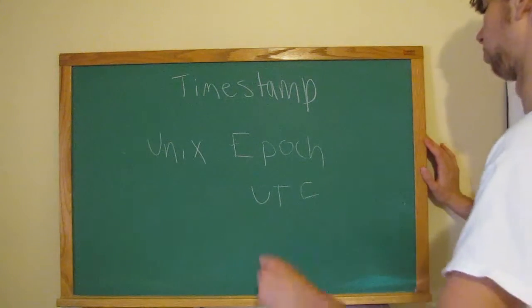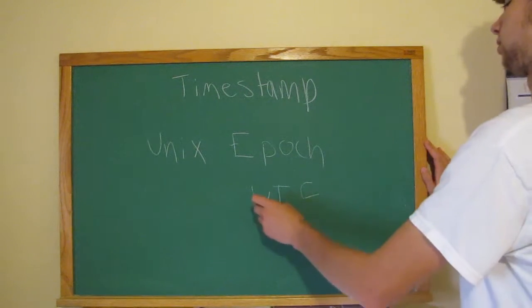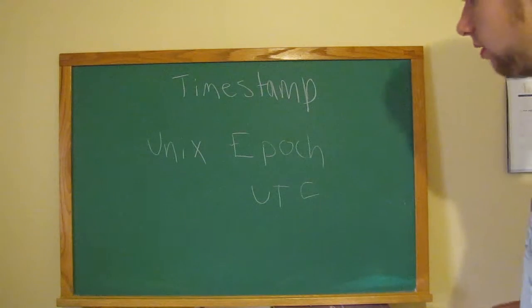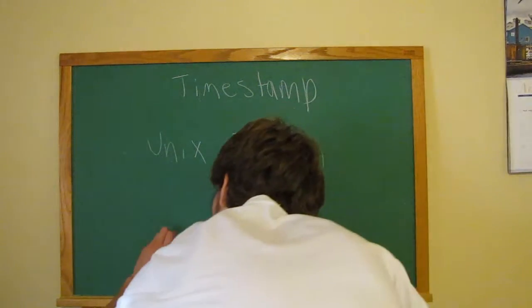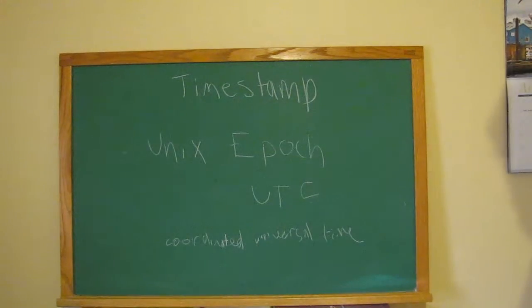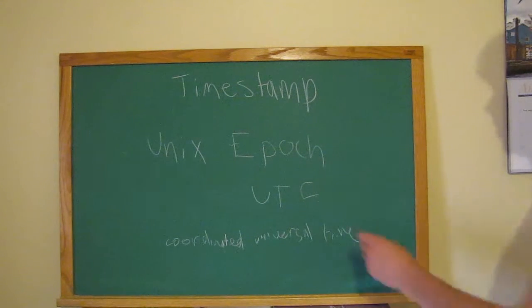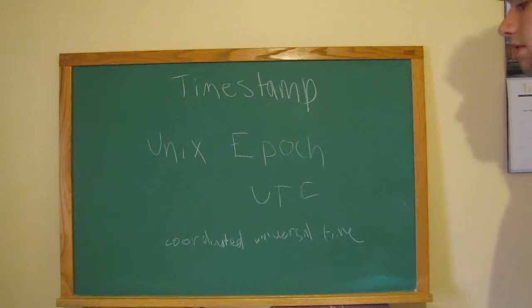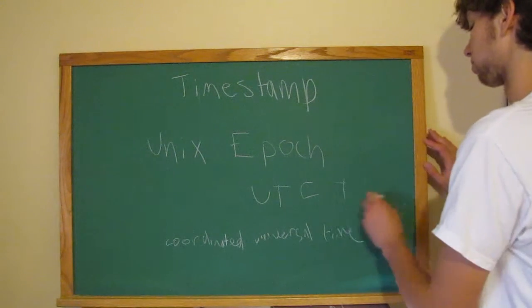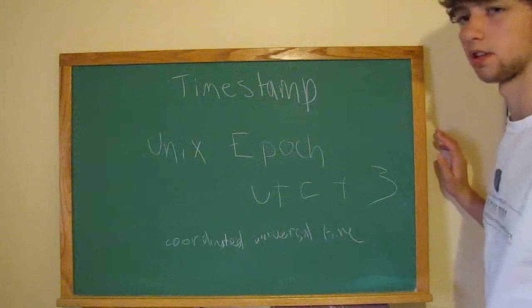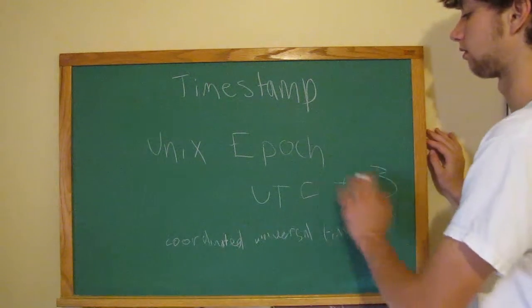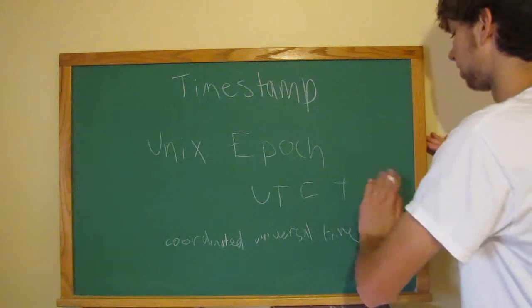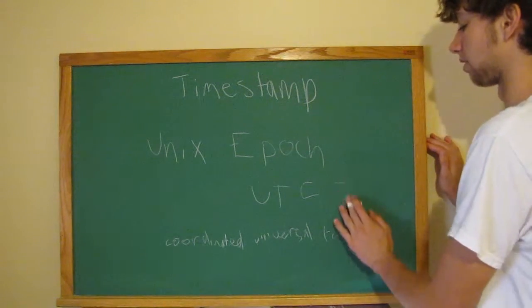UTC stands for Coordinated Universal Time — why it's like that, I don't even know. I'm pretty sure you can't even read that, but oh well. UTC can be reached from any time zone, so if you ever see UTC plus or minus like three hours, it basically converts all the time zones to a specific time zone, and that's what allows it to be universal.